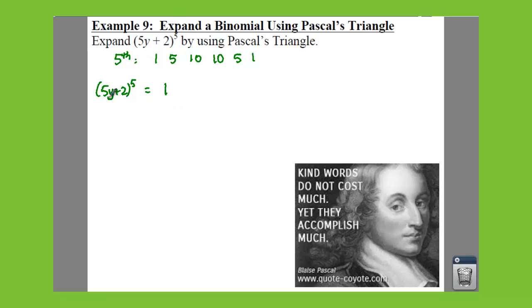Now we're going to have our 5y to the, you guessed it, to the fifth. You start with your n. And then we're going to have your 2, which is here. That's going to be 2 to the 0.